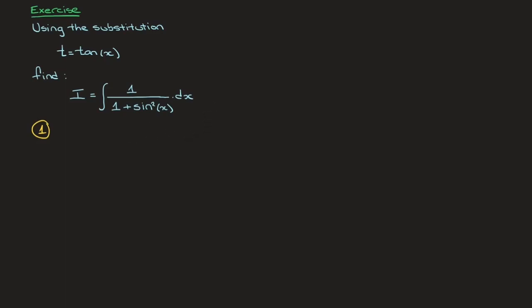Looking at what we have here, our task is to rewrite sine squared of x in terms of t, as well as dx in terms of t. For the t equals tan of x substitution, there's a nice trick for handling sine squared of x or cosine squared of x. Using right-angle trigonometry, we draw a right-angle triangle with interior angle x. Since t must equal tan of x, we want the tangent of this angle x to equal t.